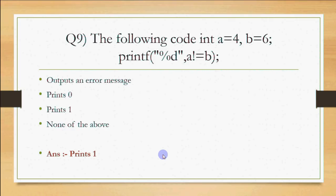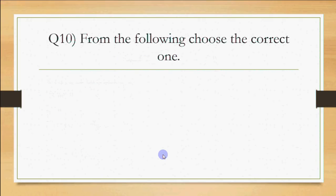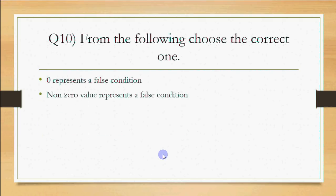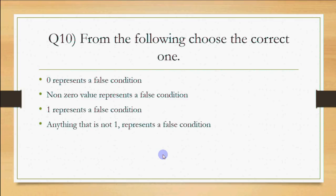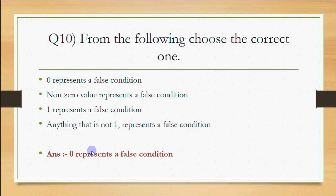Always remember: in C, 0 means false and 1 (or any non-zero value) means true. The next question asks to choose the correct statement. The correct answer is: 0 represents a false condition. Non-zero value representing false is wrong; 1 representing false is wrong; and anything not equal to 1 representing false is also wrong. Anything which is not 0 represents true. These are small but important concepts for entrance and placement exams.